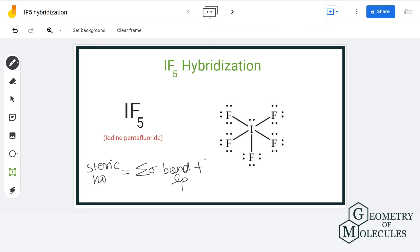Let us have a look at the Lewis structure of IF5. We can clearly see that the central atom iodine has formed 5 sigma bonds with 5 fluorine atoms and also has one lone pair of electrons.